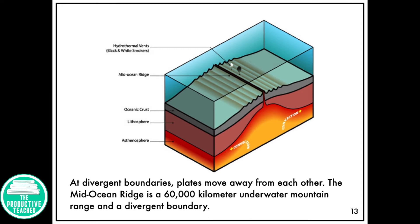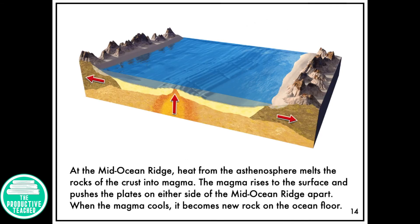At divergent boundaries, plates move away from each other. The mid-ocean ridge is a 60,000 kilometer underwater mountain range and a divergent boundary. At the mid-ocean ridge, heat from the asthenosphere melts the rocks of the crust into magma. The magma rises to the surface and pushes the plates on either side apart. When the magma cools, it becomes new rock on the ocean floor.